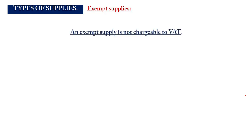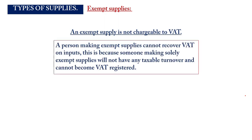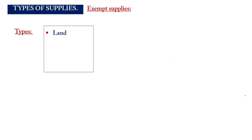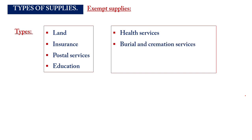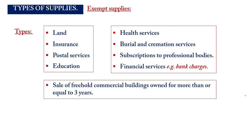The third type is exempt supplies. VAT is not charged on exempt transactions. A person making exempt supplies cannot register for VAT in the first place, meaning any VAT charged on their purchases cannot be claimed as an input. Examples of exempt supplies include land, insurance, postal services, education, health services, burial and cremation services, subscriptions to professional bodies, and financial services such as bank charges and credit card charges.